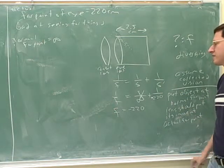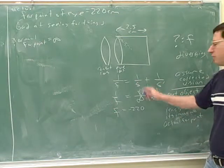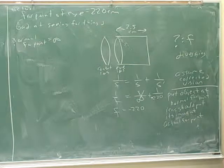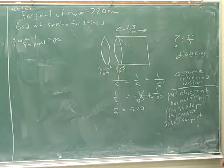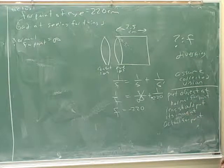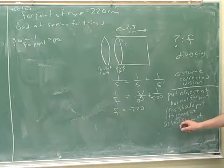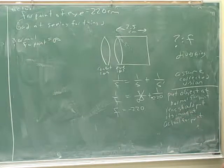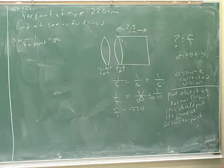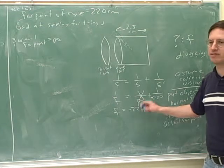Remember the whole point here is to see objects that are far away, infinitely far away. If this person had had a bad near point, then you would want to put the object at the normal near point, and then the lens should put its image at the actual near point of the eye. So it would be very similar, except that the normal near point is not infinite, it's just 25 centimeters.